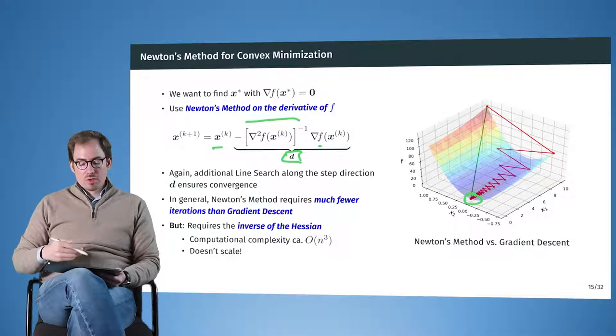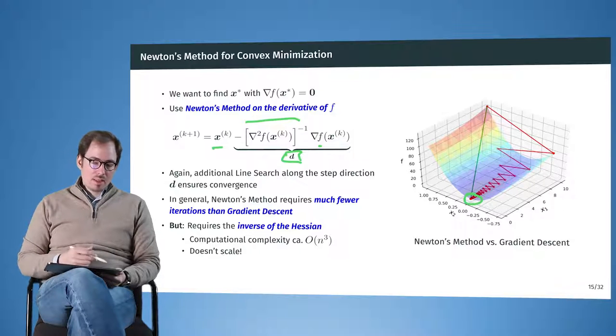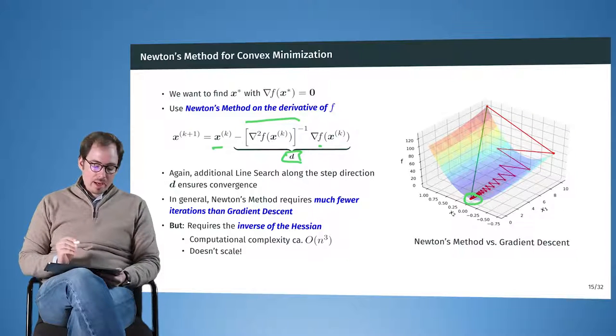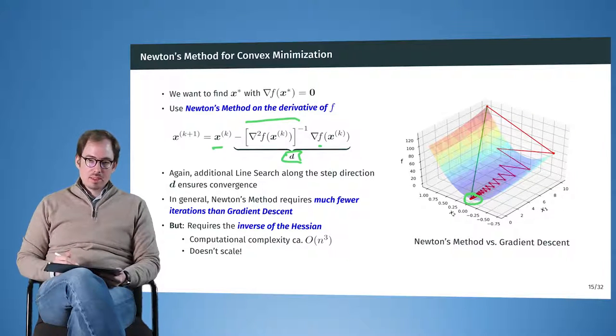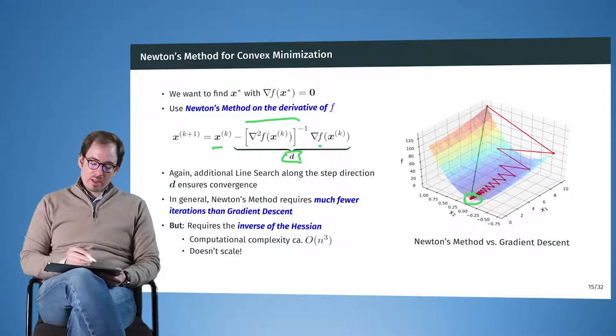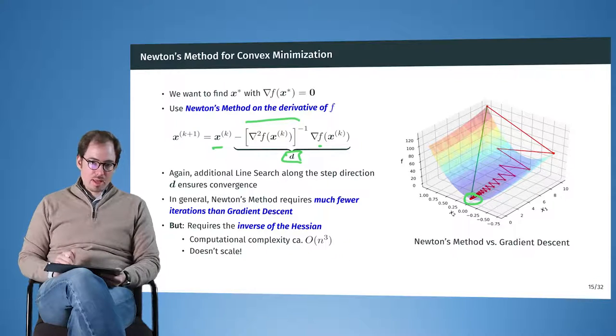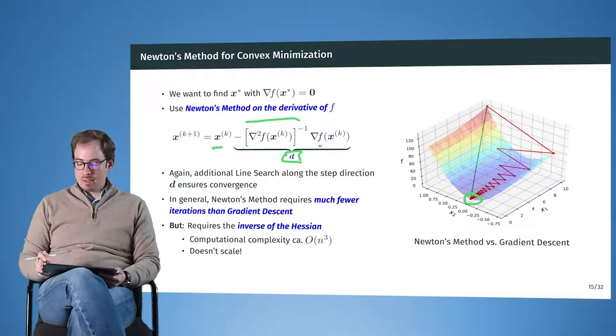And for very high dimensional problems, where we can no longer easily compute the inverse of the Hessian, there it becomes interesting to look at alternative methods. But if that wasn't a problem, then Newton's method is what would be preferable.